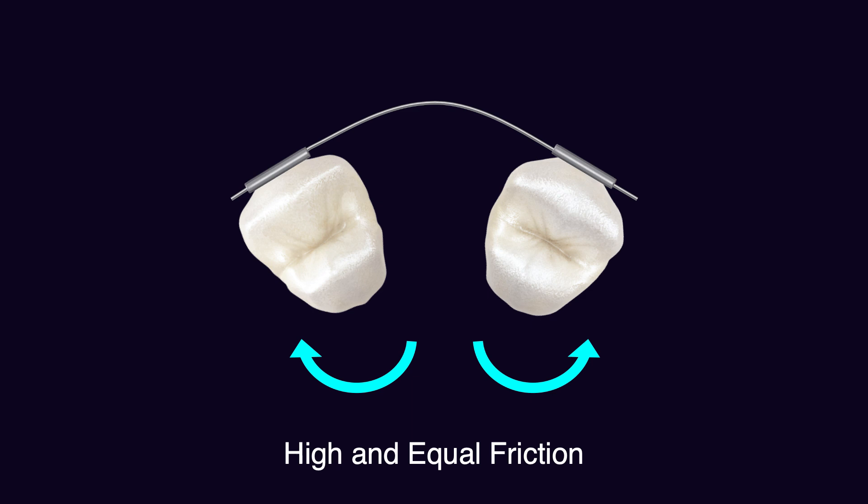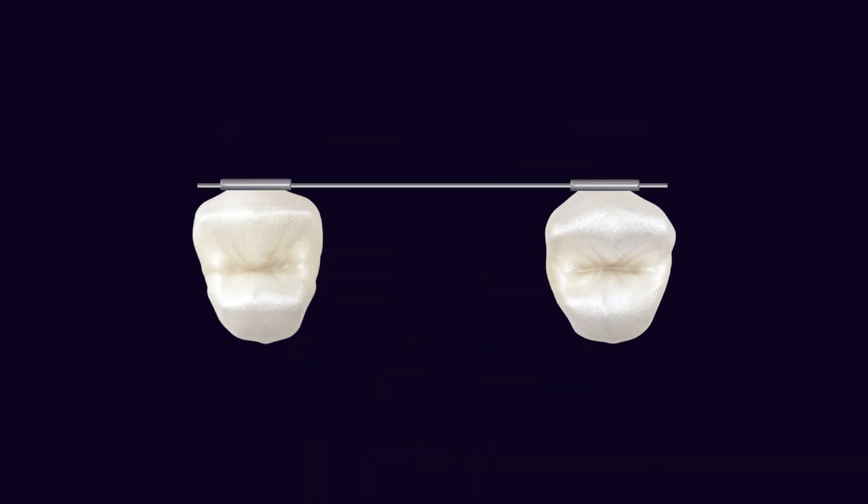The wire starts to become straight, but it is more difficult for the wire to slide through the tubes because of the higher friction. This higher friction produces larger horizontal forces, which transfer to adjacent teeth and separate them even more — which can be very useful when you have a space deficiency during the first phase of orthodontic treatment, that is leveling and aligning.